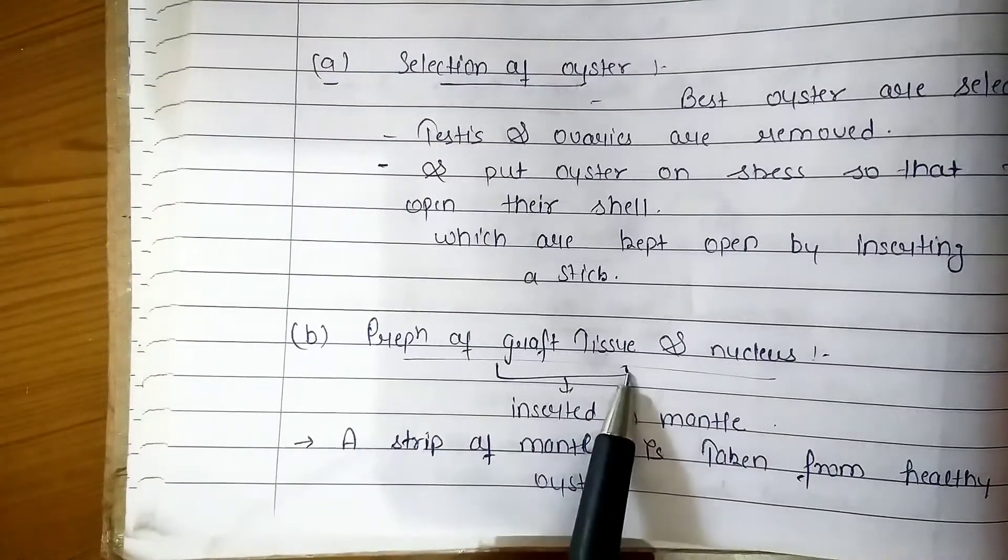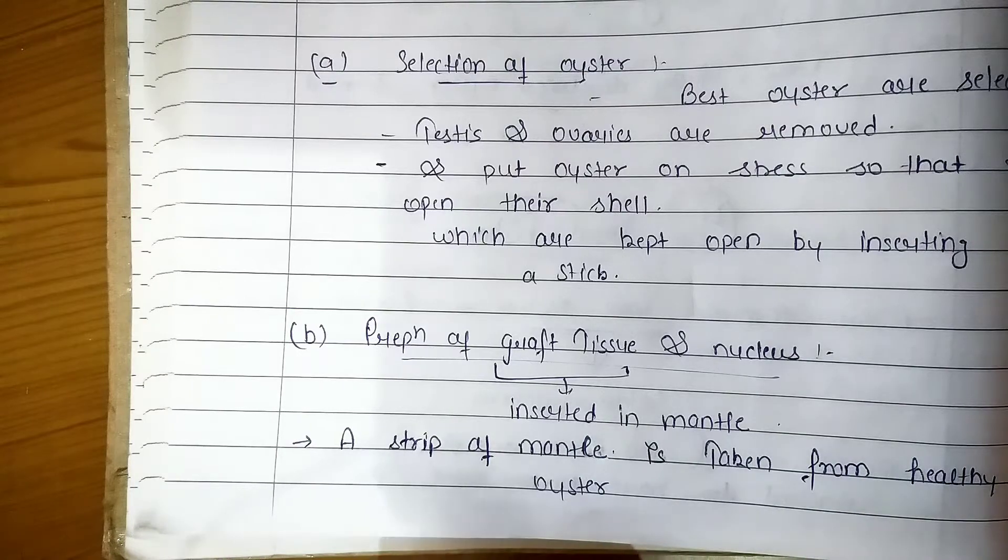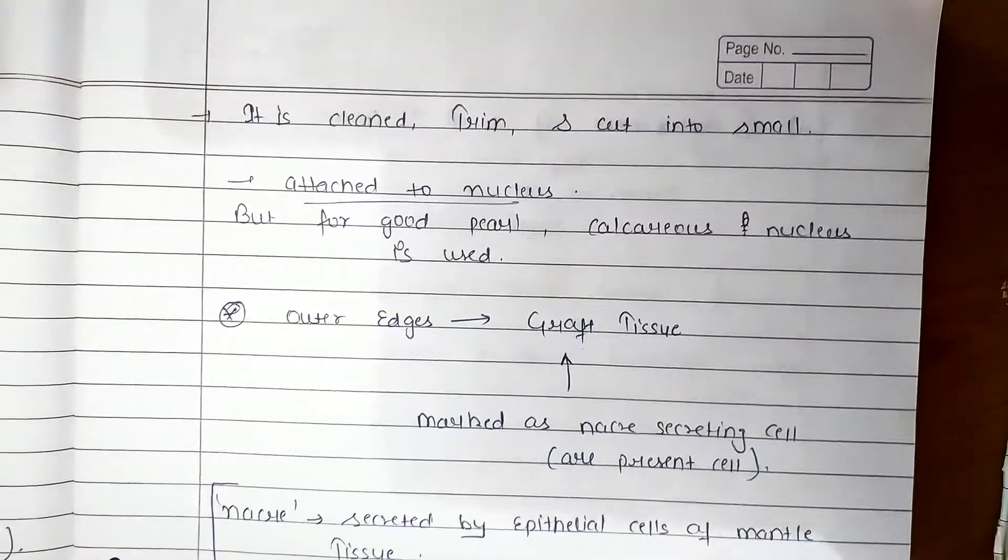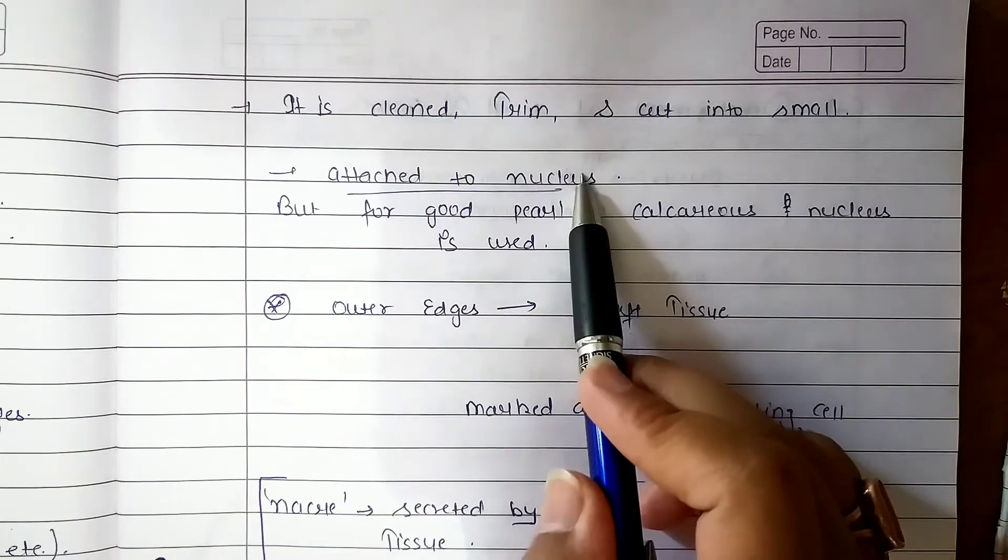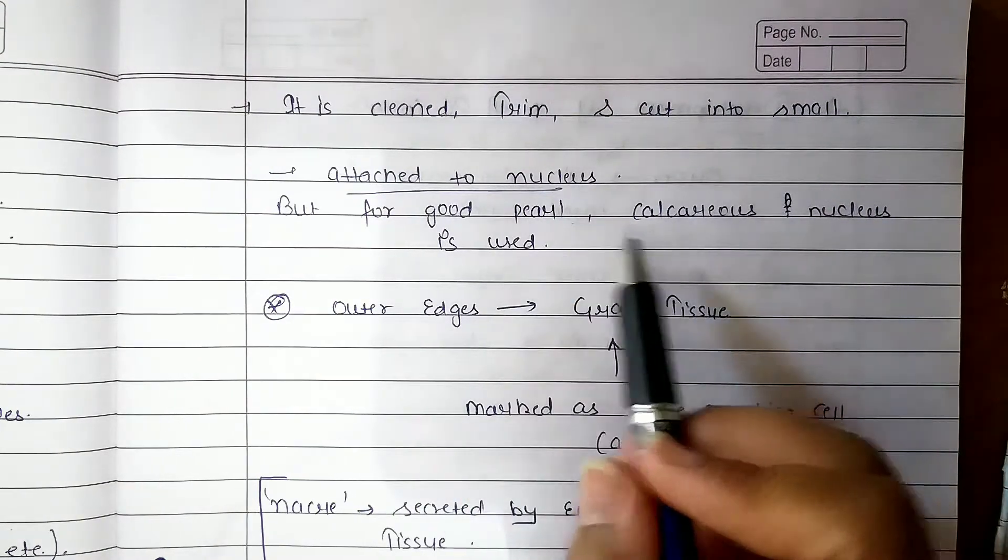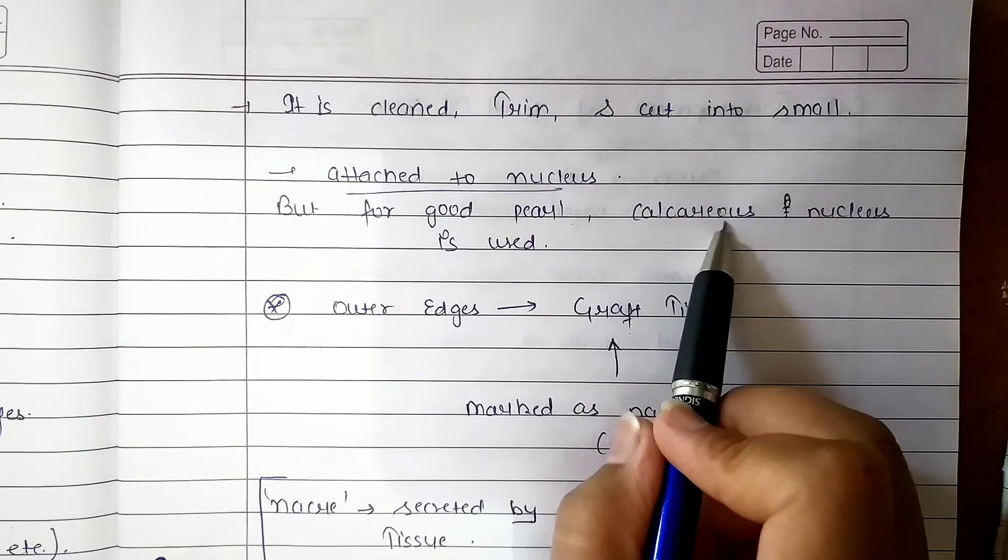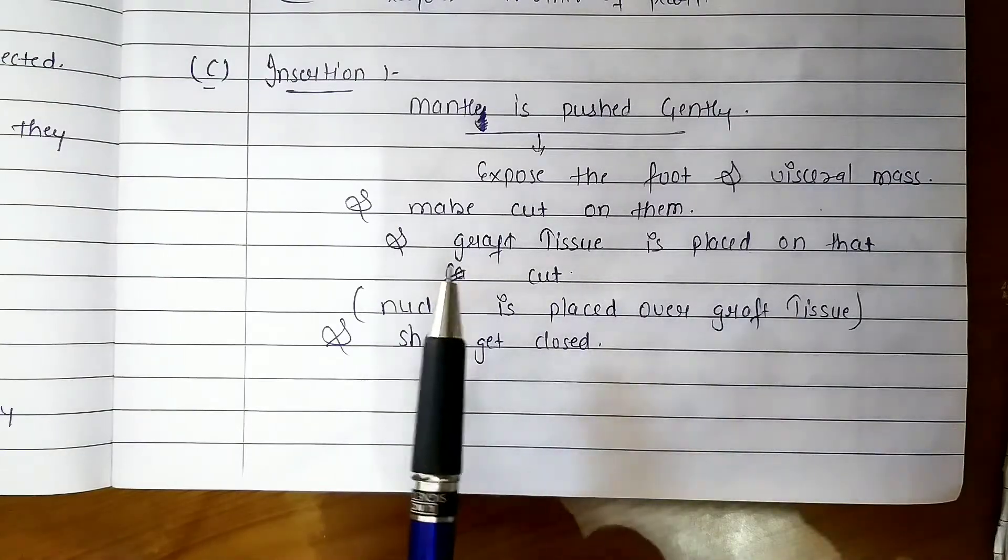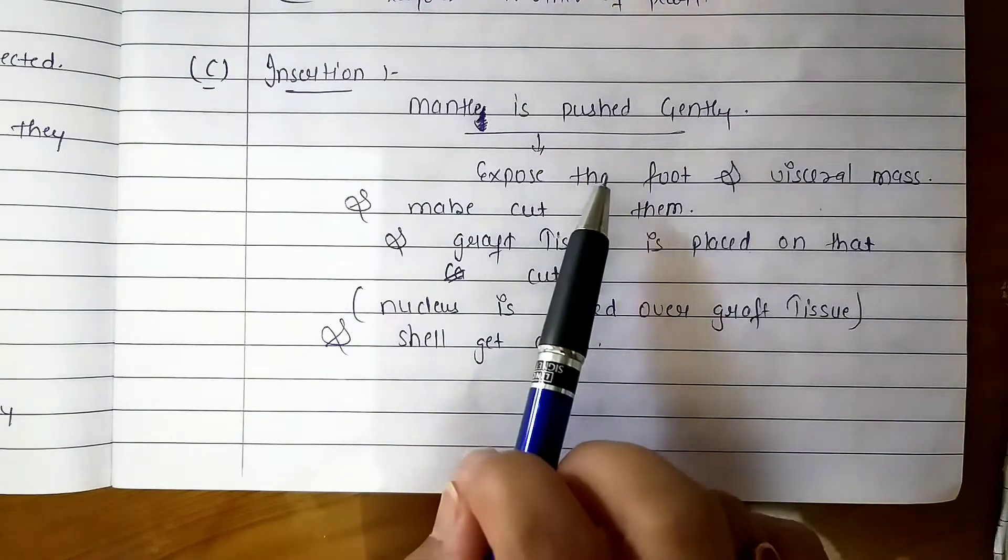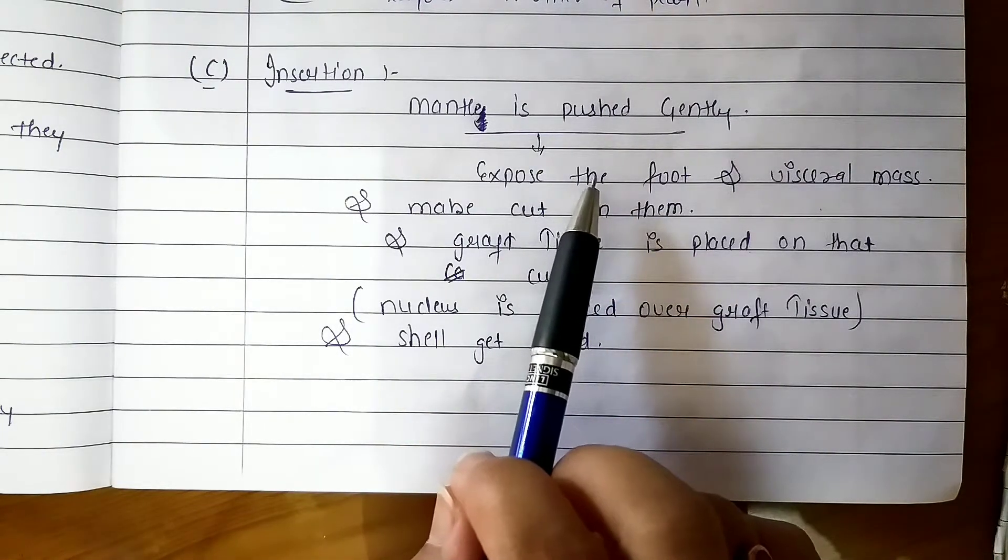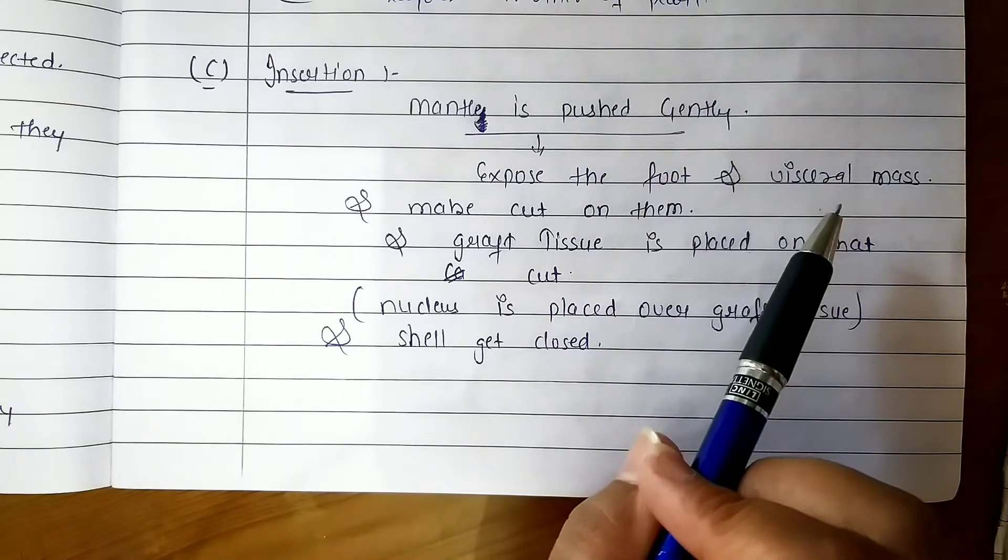Now we need to create graft tissue. Then we have to cut the mantle from the left and cut the nucleus. Now we will take the mantle and push it gently. The foot and muscle mass will be exposed and cut.